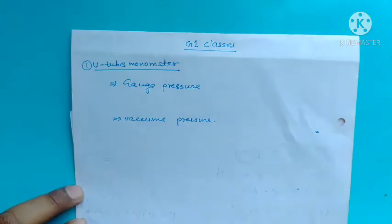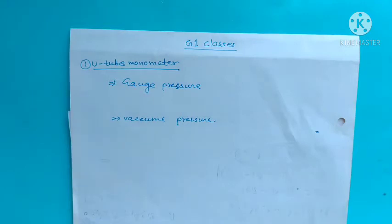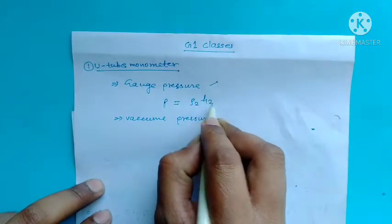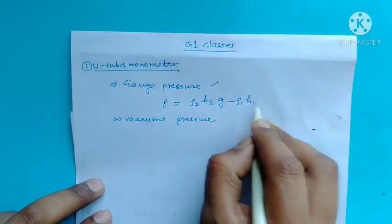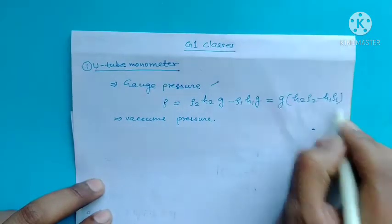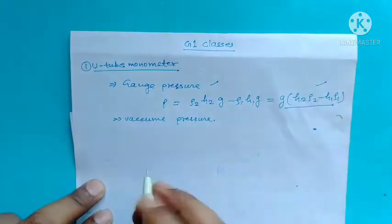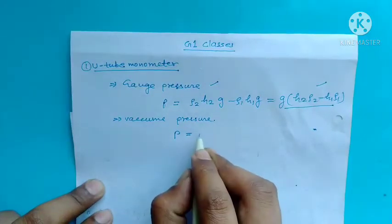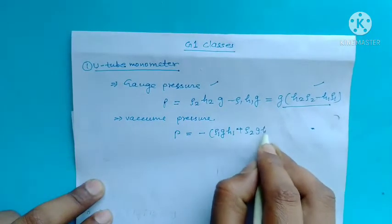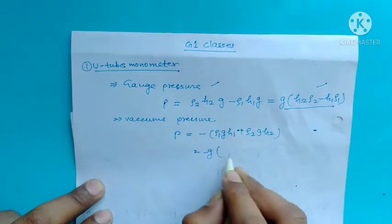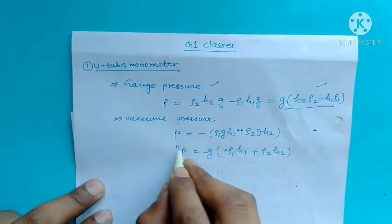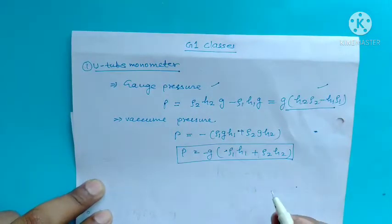Last video में हमने देखा था कि U-tube manometer का gauge pressure का formula था: P = g(ρ₂h₂ - ρ₁h₁). और vacuum pressure का formula था: P = -ρ₁gh₁ + ρ₂gh₂, यानि g(ρ₁h₁ + ρ₂h₂). यह हमने last video में देख लिया था।